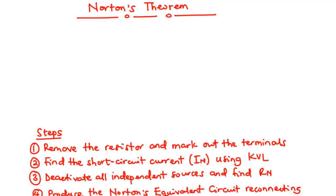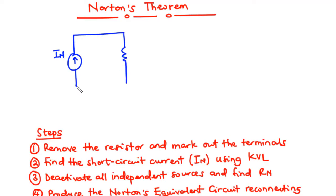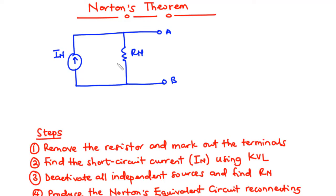Norton's theorem states that any linear network or any linear circuit connected between two terminals can be replaced by a Norton's current IN in parallel with a Norton's resistance Rn connected between the same two terminals. IN is the current that flows in the short circuit between the two terminals. Rn is equal to the equivalent resistance seen between the two terminals when all independent sources are deactivated. This circuit is called the Norton's equivalent circuit.